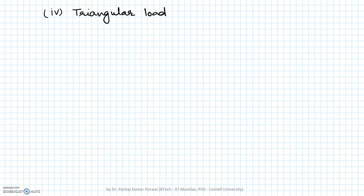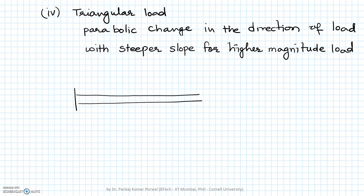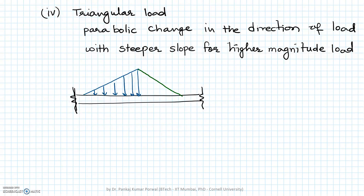Next is triangular load. In the case of a triangular load, the change in shear force diagram will be parabolic. The direction of change will be the direction of the triangular load, and the slope of the shear force diagram will be steeper where the magnitude of the triangular load is higher. Consider a segment of beam with two types of triangular loads — first an increasing load and second a decreasing load — both acting in the downward direction.